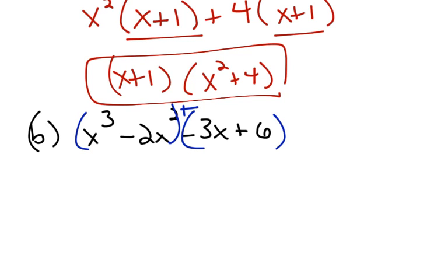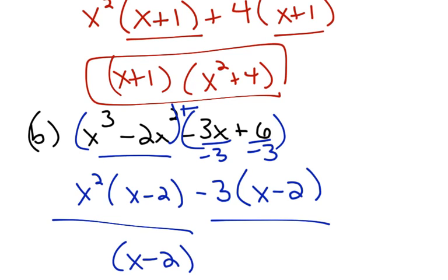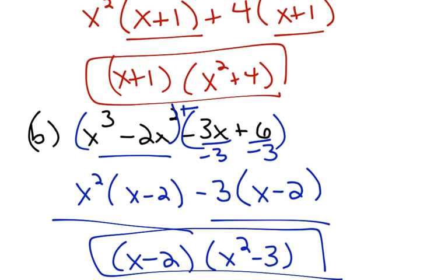In problem b you have to be careful. Remember that minus 3x is the same as plus negative 3x — you still need a plus sign between your two groups, so I just made the 3x negative. When I factor the greatest common factor out of the first group, it's x squared, and I'm left with x minus 2. I want the second group to also have x minus 2 left over, so I factor out negative 3. That changes the sign of the second term — dividing both by negative 3 makes the first term positive and the second term negative. Now both groups share x minus 2, and when I take it out I'm left with x squared minus 3. And that is factor by grouping — and that is the end of algebraic expressions.